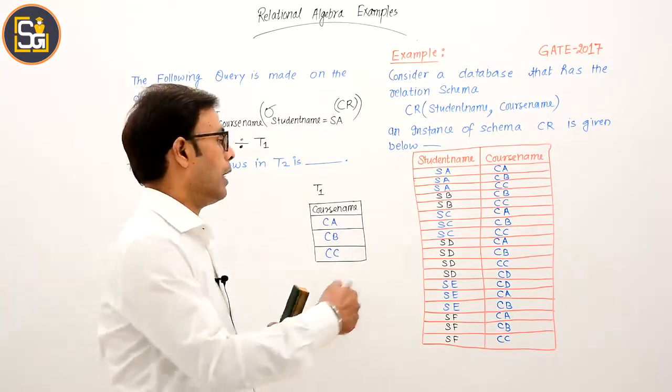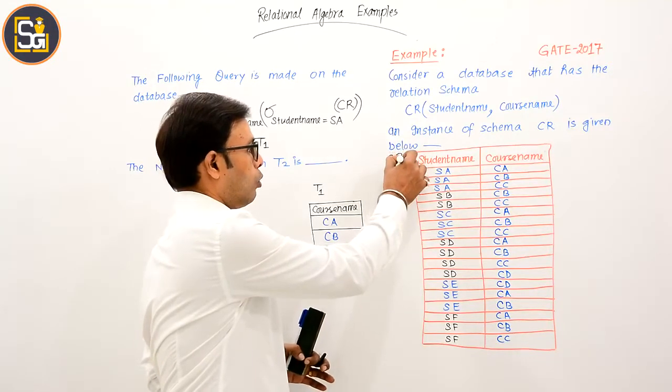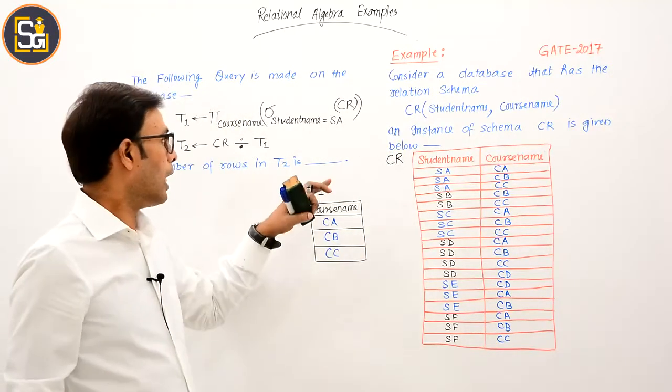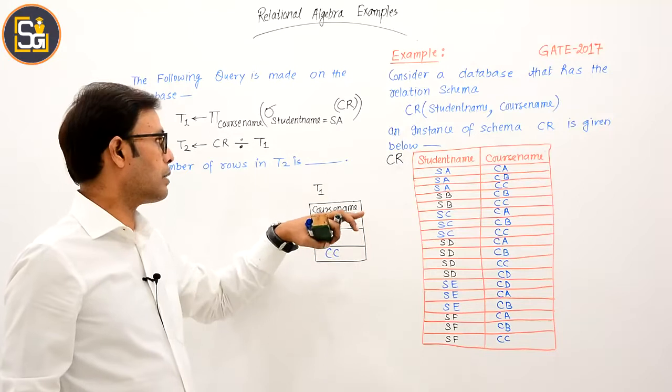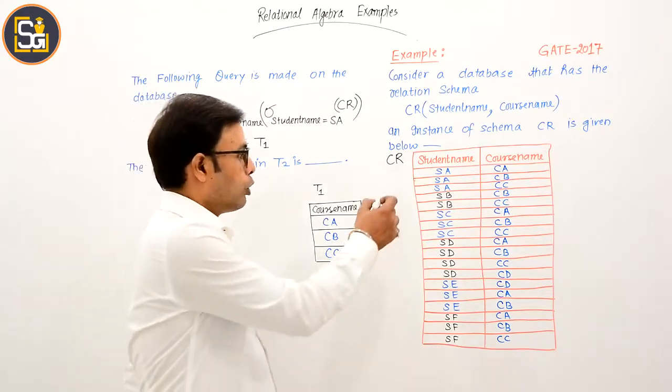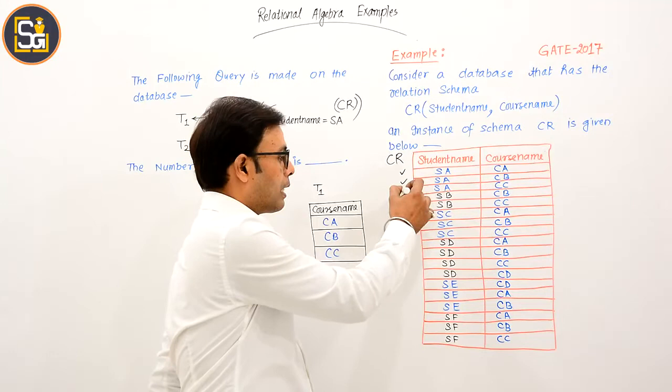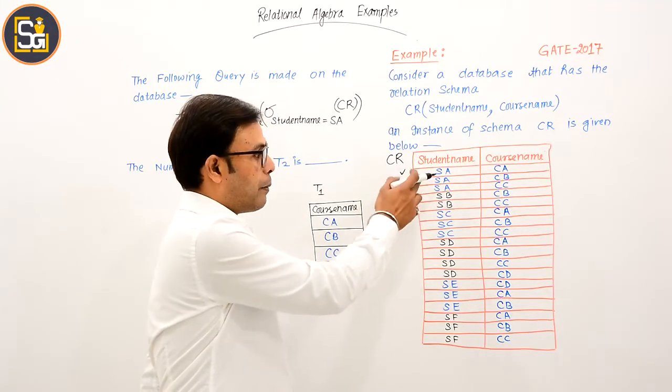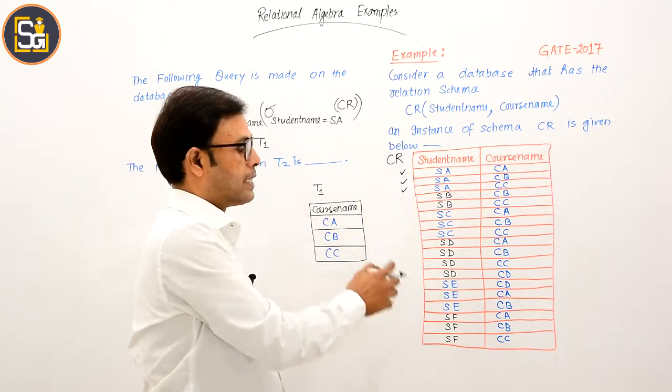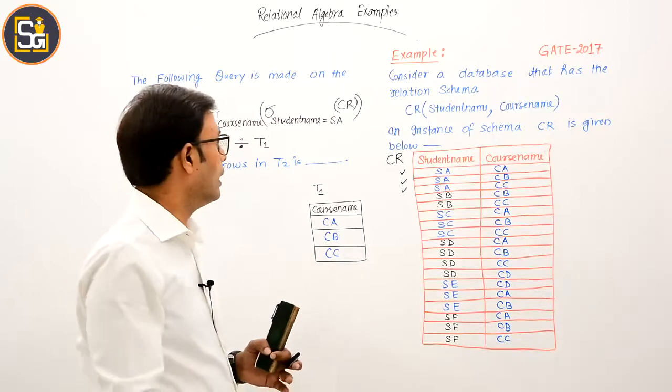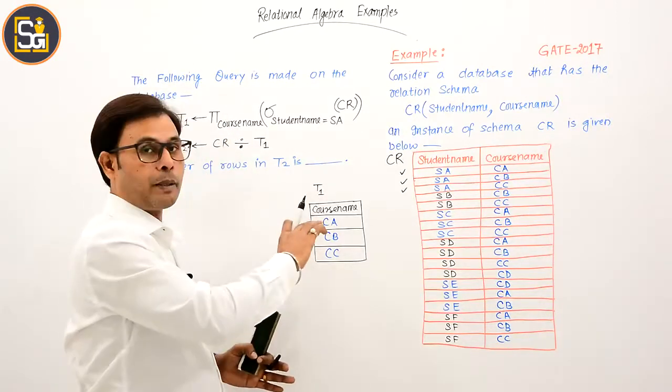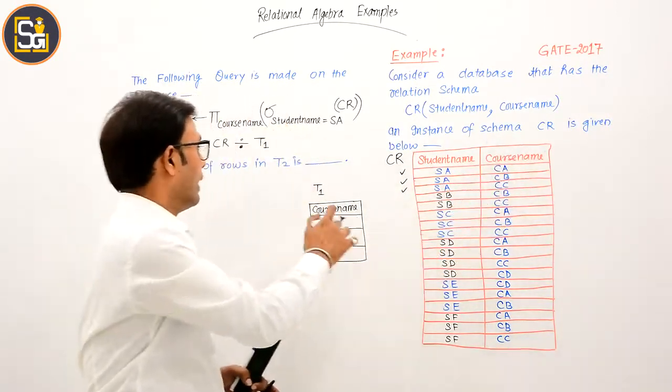This table's name is CR. Now in this, where is student name SA? Look at this: first tuple, second tuple, and third tuple. These three places have student name SA, and nowhere else is this.